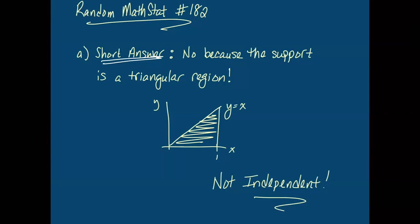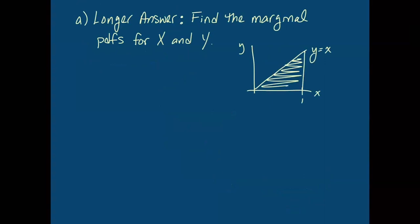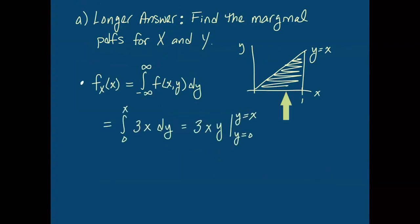If you want to go the more traditional route and actually work out the marginal PDFs, you can do that as well. Here's the region again, to give us an idea of what our limits of integration should be. The marginal PDF for X is the integral of the joint PDF over all values of Y. In particular, our joint PDF is 3X, and for any particular X, Y can run from 0 to X. We get 3X², and this is for any X between 0 and 1, the PDF is 0 otherwise.